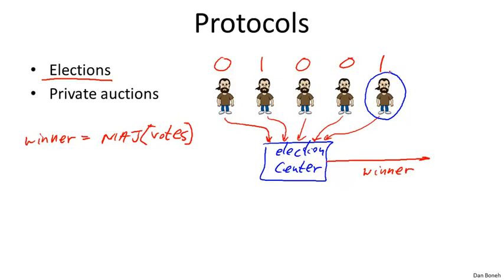This is an example of a protocol involving six parties — five voters and one election center — that compute amongst themselves such that at the end of the computation, the result of the election is known but nothing else is revealed about the individual inputs.